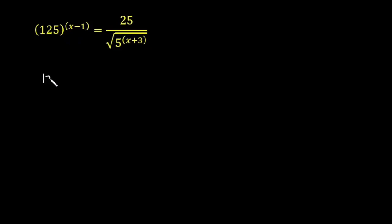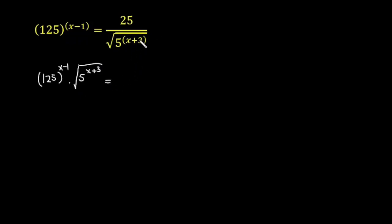Multiplying on the left-hand side gives 125 raised to the power x minus 1 times the square root of 5 raised to the power x plus 3. On the right-hand side, when you multiply, the denominator cancels with the numerator, leaving 25.